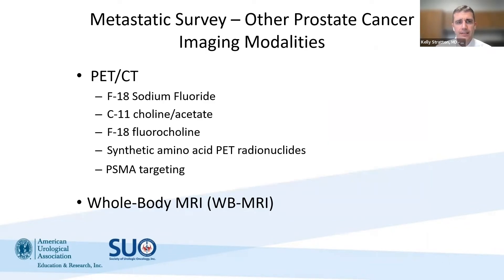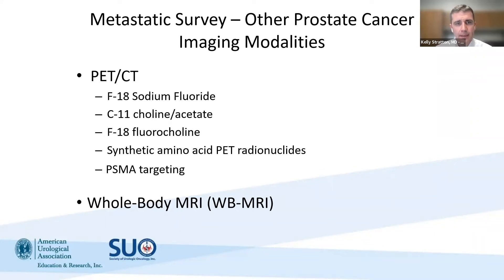When looking for prostate cancer metastasis and considering PET imaging, there are several different imaging options. Some are not widely available but have been used historically: sodium fluoride PET, predominantly for bone metastasis, was used historically but is no longer used and was not approved. Choline PET is difficult to obtain and being used less. F18 fluorocholine is similar to choline PET. There are also synthetic amino acid PET radionuclides, PSMA-targeted PET imaging, and full-body MRI.